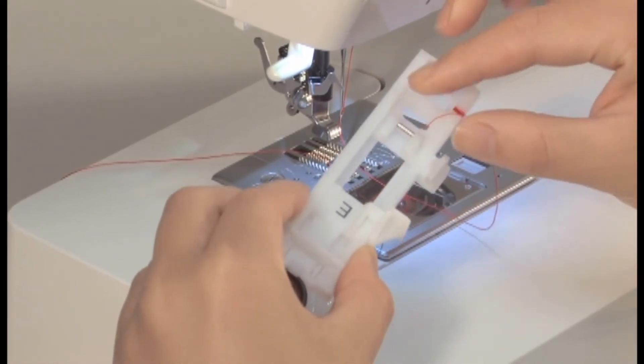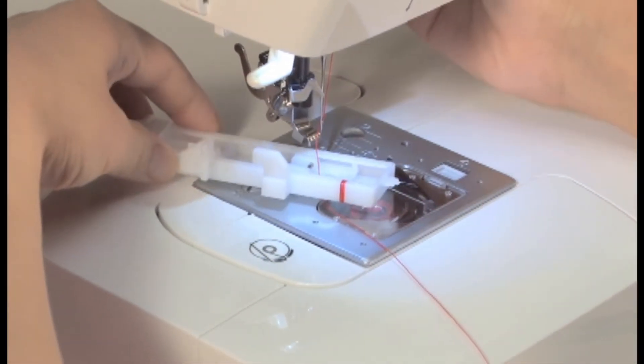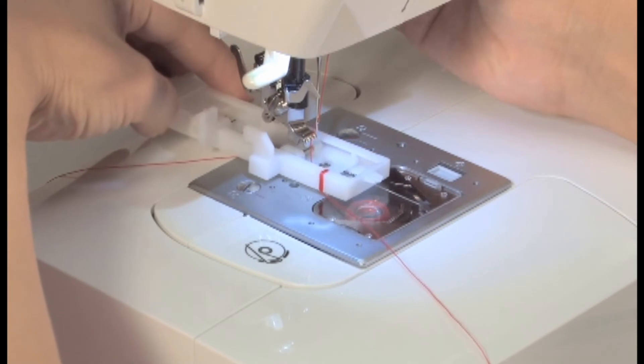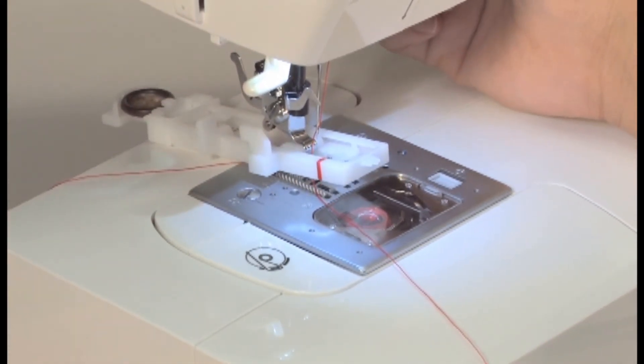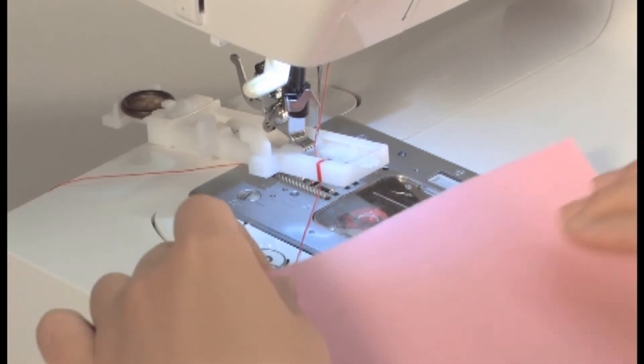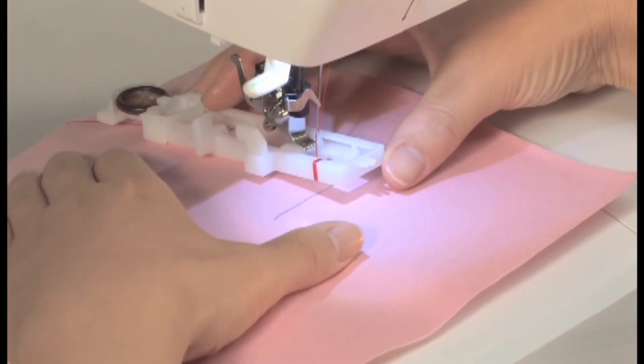Pass the needle thread down through the hole in the presser foot and pull it out sideways. Insert the fabric and match the marking on fabric and presser foot.